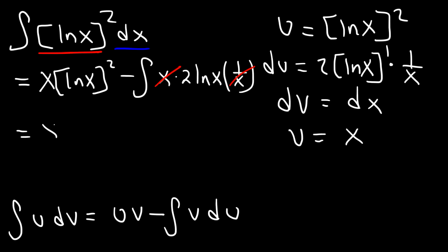And so we're left with x ln x squared. I'm going to take the constant 2 and move it to the front. Minus 2 integral ln x dx. And I forgot the dx term here, but you can put it there if you want to.